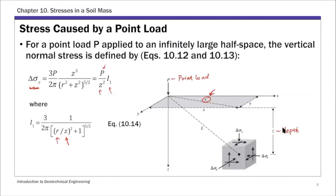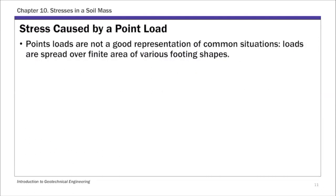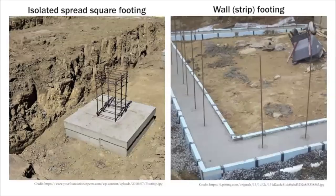Point load solution is really simple and easy to use, but point loads are not a good representation of common situations. For many engineering applications, the loads are spread over a finite area. For example, on the left is an isolated square footing, and on the right is a wall strip footing. In reality, the load from the building is spread over these finite areas, so the point load may or may not be a good approximation.